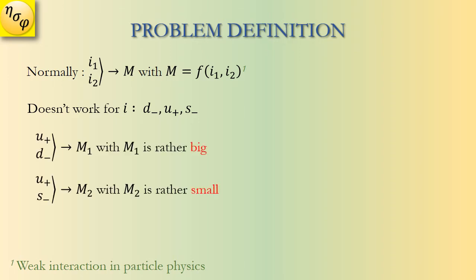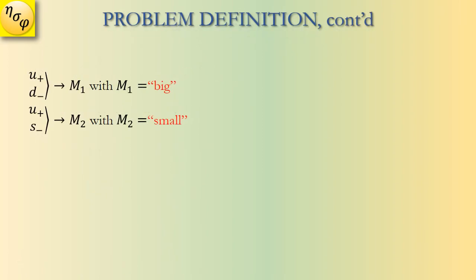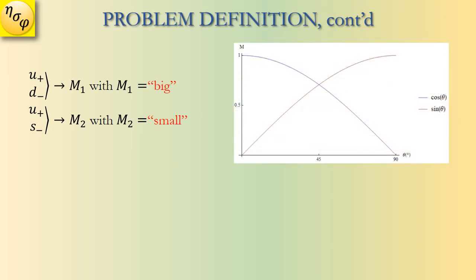u and d result in m which is rather big, while u and s result in m which is rather small. What do physicists usually do to work with rather big and rather small values? Physicists will use something that requires as few parameters as possible. Physicists can use the functions of sine and cosine and take an angle as a parameter.